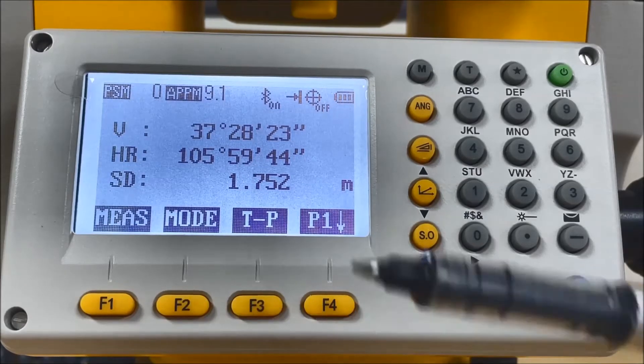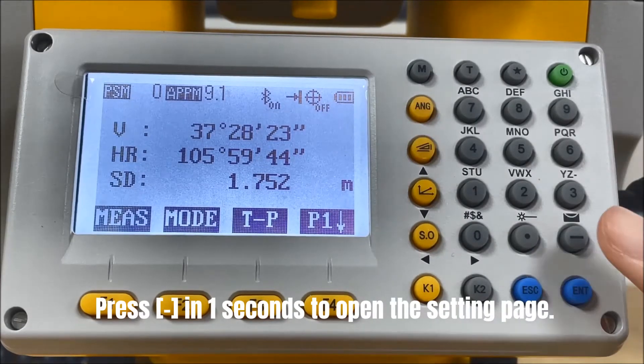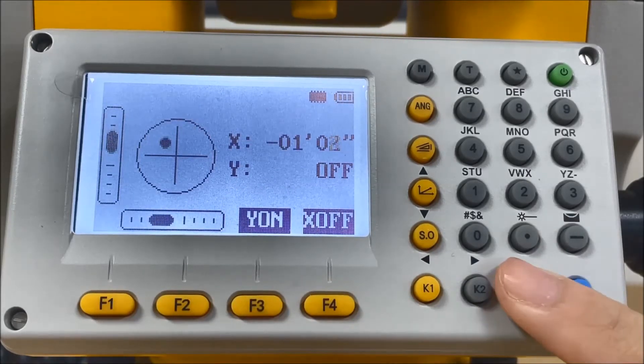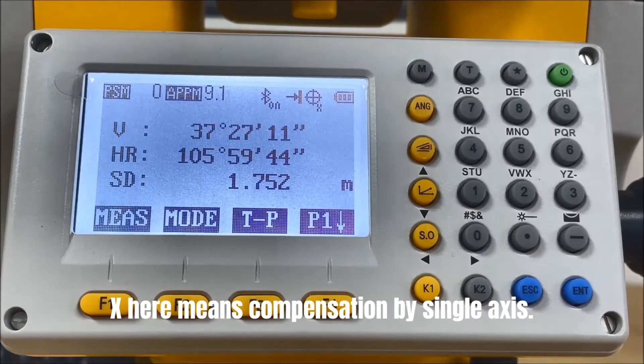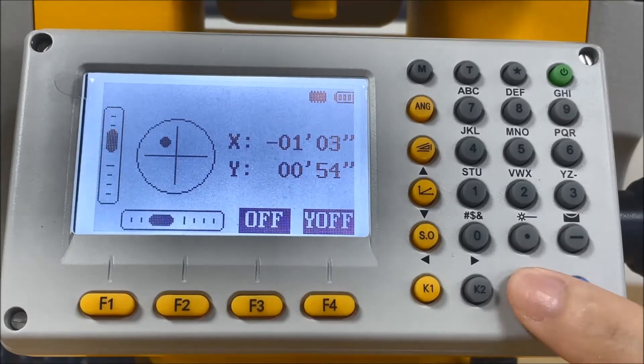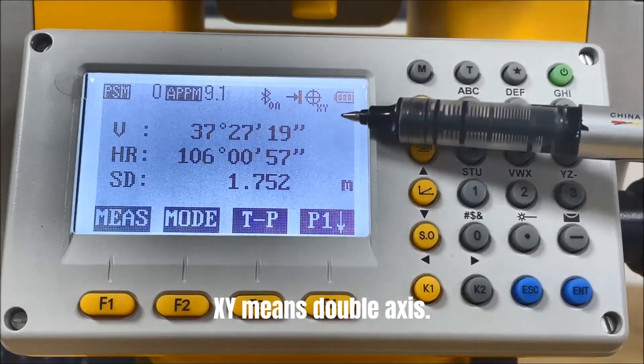The third one is Compensator. Press and hold the dash for one second to open the setting page of the Electronic Compensator. X here means compensation by single axis. X and Y means double axis.